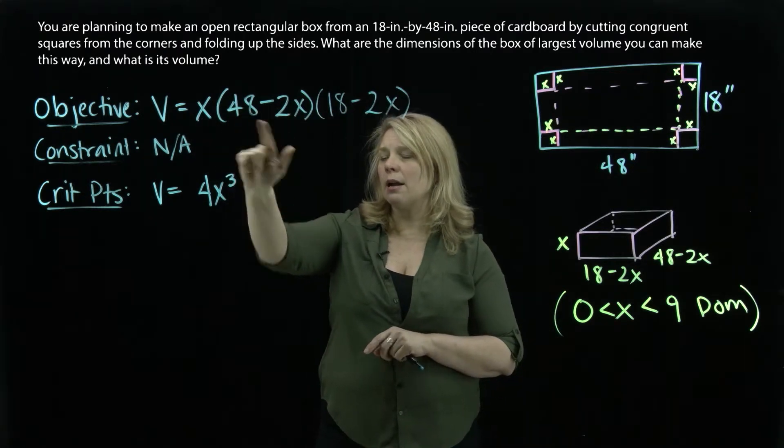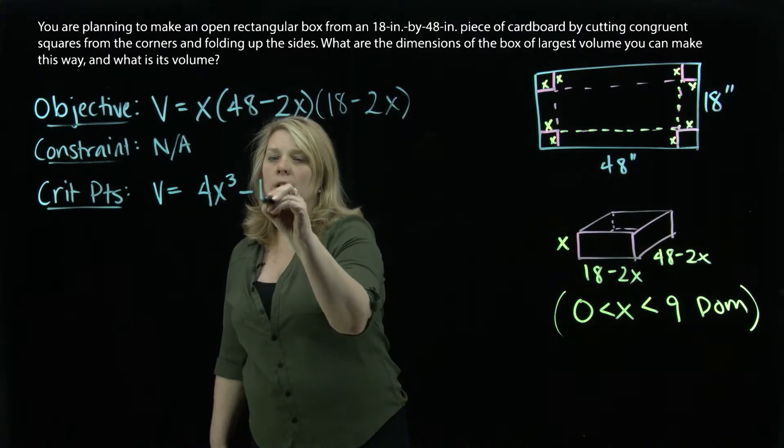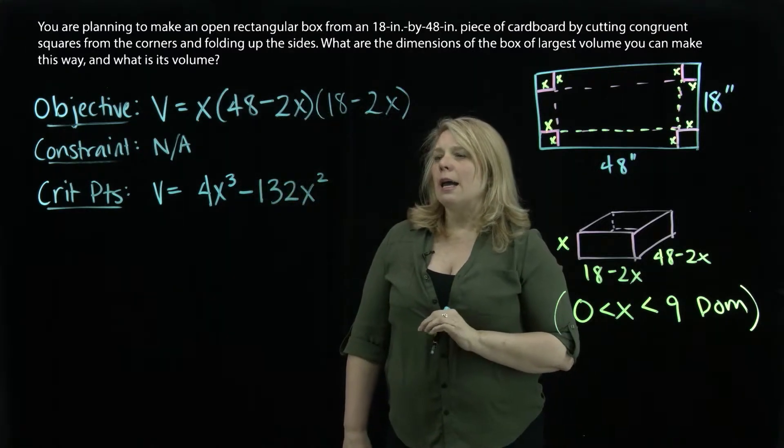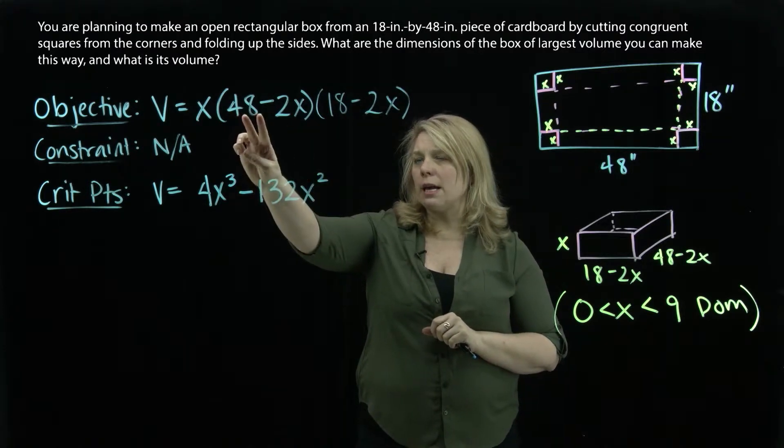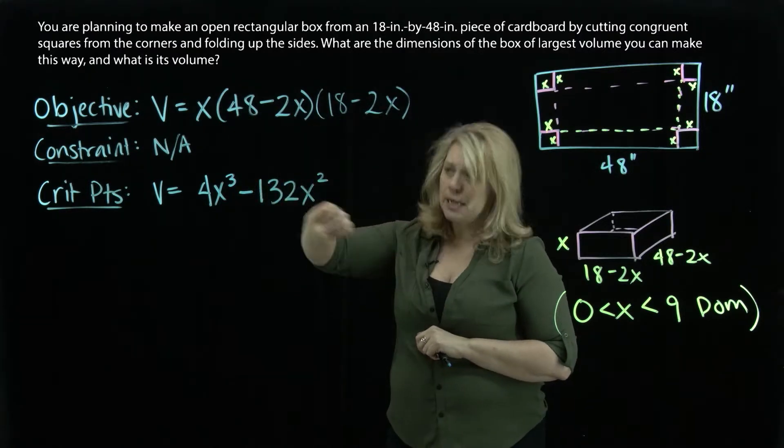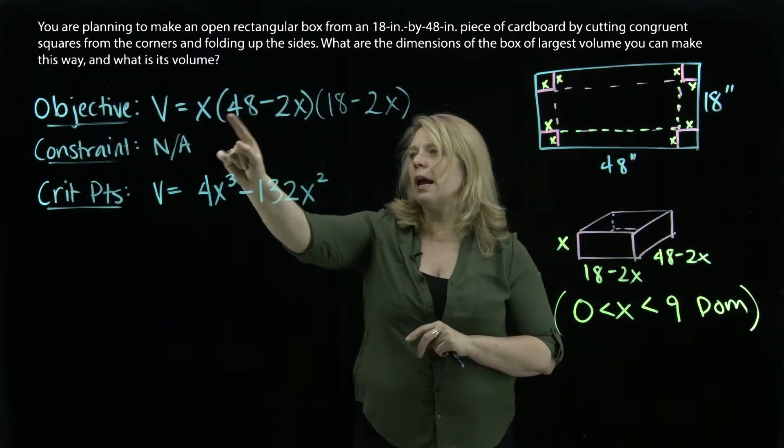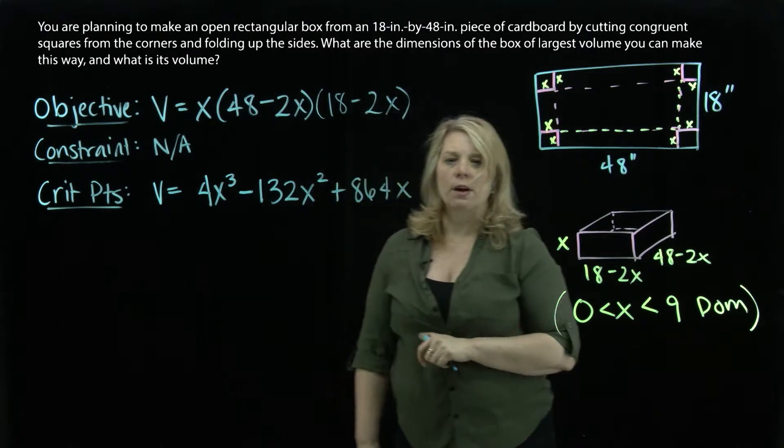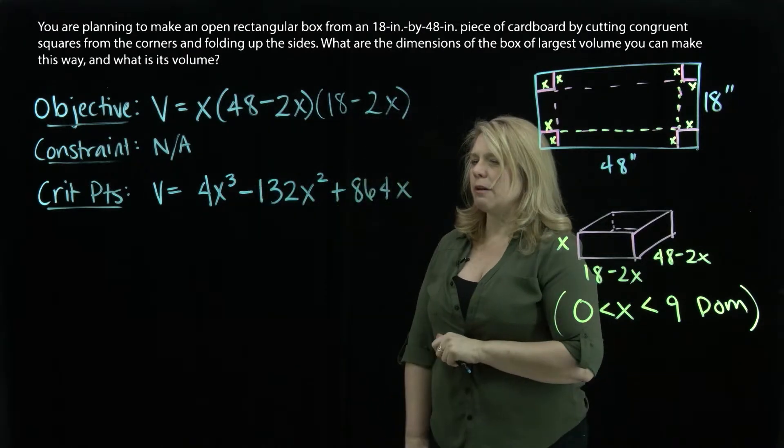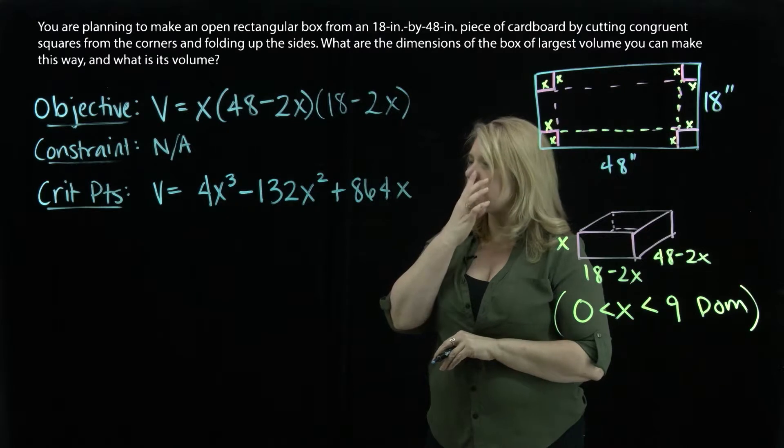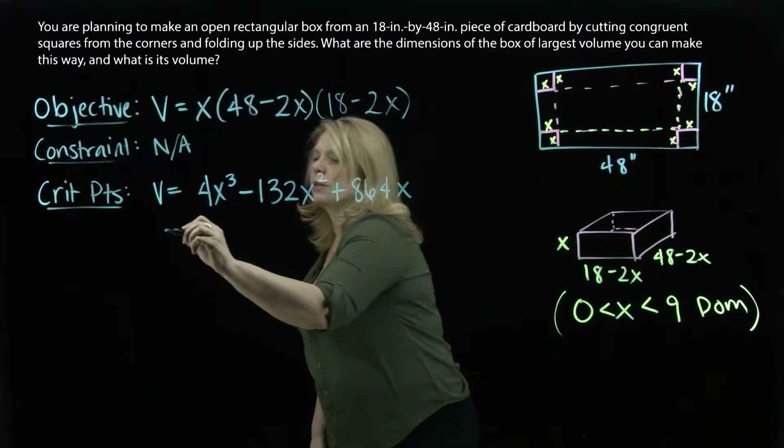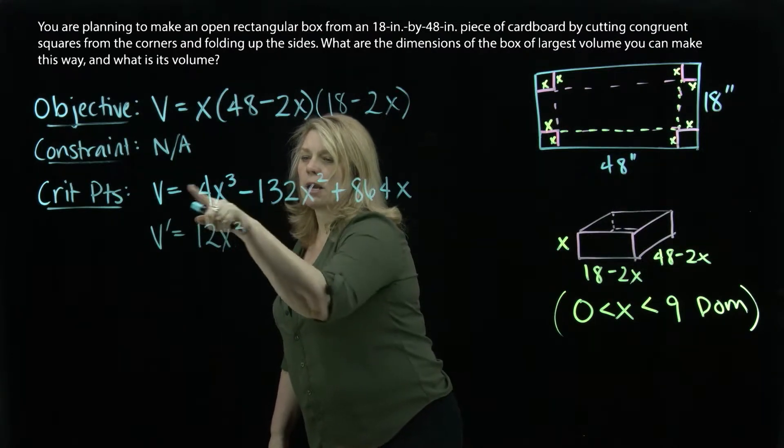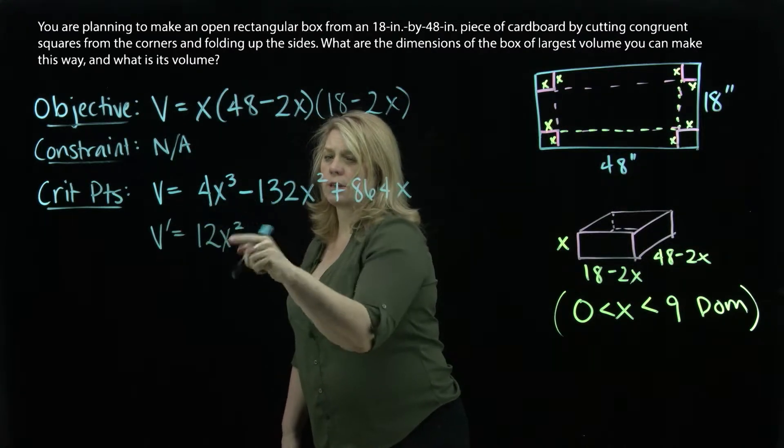And then distribute that x through. So negative 132x squared. And then for the constant term, when I multiply these together, 48 times 18 is 864, and then times that other x there. So you get your calculator out to help you with the arithmetic. But this is our v function. But in order to find the critical points, we want the v prime, the derivative. I'm being careful here in making sure I label the original function and the derivative.